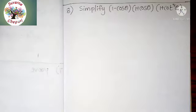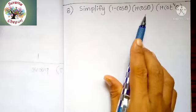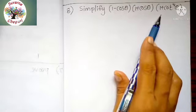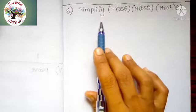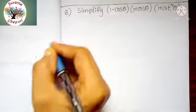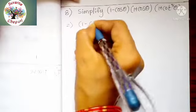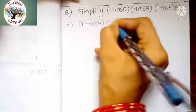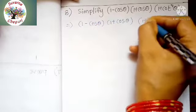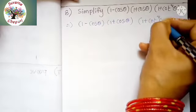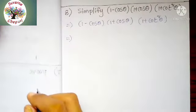See the 8th sum students. Simplify 1 minus cos theta, into 1 plus cos theta, into 1 plus cos squared theta. How to solve this one? First note down the question: 1 minus cos theta, into 1 plus cos theta, into 1 plus cos squared theta.